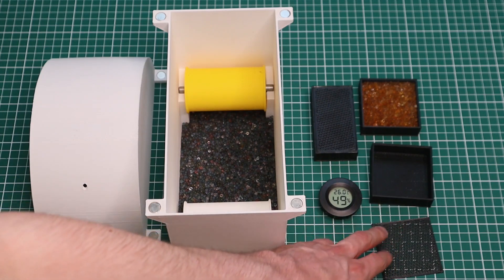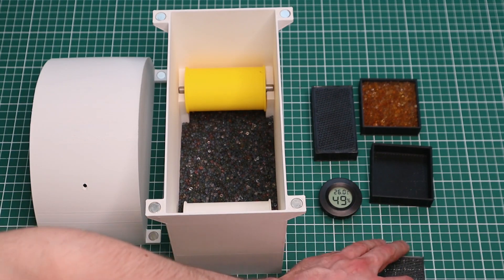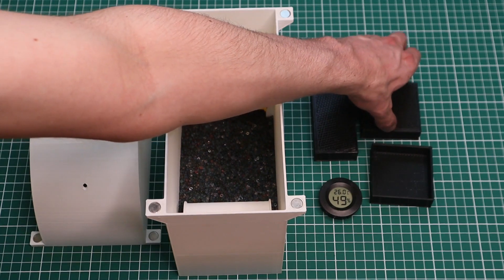Once you've 3D printed a box and a lid, you can just pour some desiccant into the box, and then put the lid on like this.